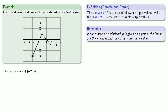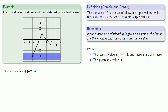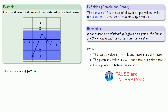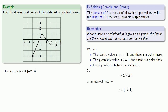The range is going to be the set of y values. Looking at our graph, we find the least and highest y value. The least y value is y = −3, which occurs at this point, and the highest y value is y = 1, and there is a point there. Every y value in between −3 and 1 is included. So y is greater than or equal to −3 and less than or equal to 1, or in interval notation, y is in [−3, 1].